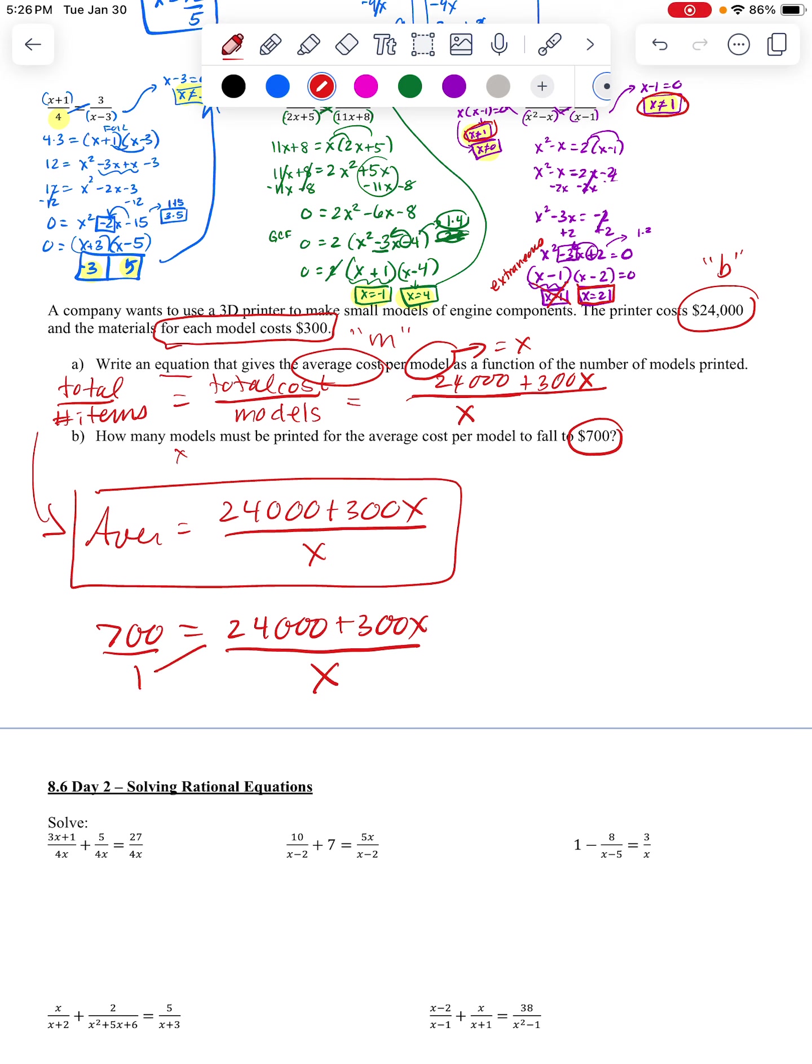Then I'll have 1 times 24,000 plus 300X equals 700 times X. And now Dolly's digging at the floor. I'm going to move this over. It's crazy hour here, apparently.